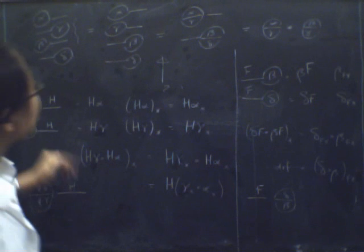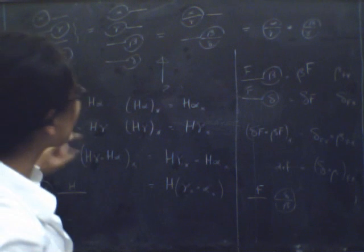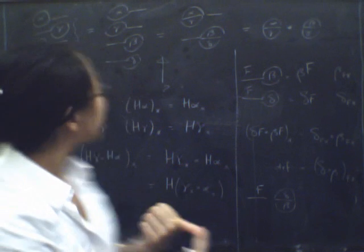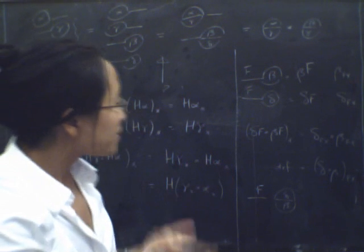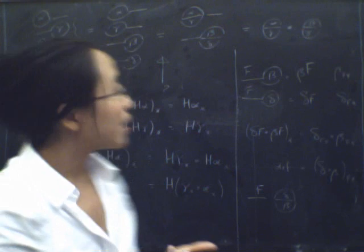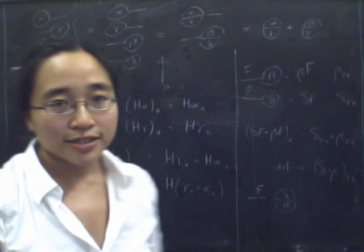So in fact, this interchange law comes from three things. It comes from functoriality of one of the things pointing this way. It comes from the definition of vertical composition. And it comes from naturality somewhere in the middle.